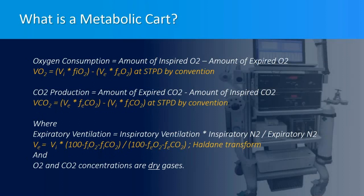To calculate oxygen consumption, subtract the amount of expired oxygen from the amount of inspired oxygen. To calculate CO2 production, subtract the amount of inspired CO2 from the amount of expired carbon dioxide. The O2 and CO2 concentrations are assumed to be dry gases. Expiratory ventilation may be determined from inspiratory ventilation using the Haldane transform. O2 consumption and CO2 production are determined by either direct application of these equations or a combination of equations and proprietary algorithms. It is important to note that VO2 and VCO2 are derived values, not measured values.